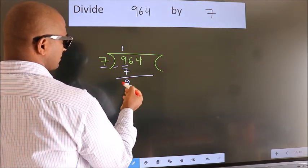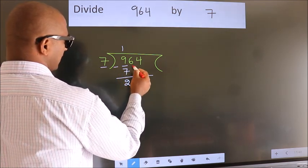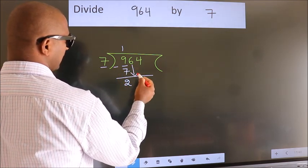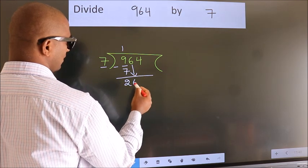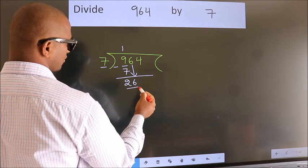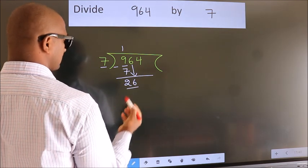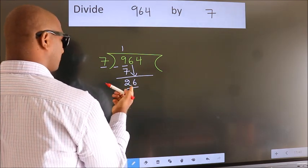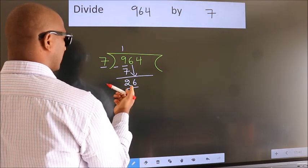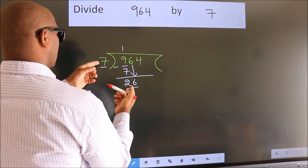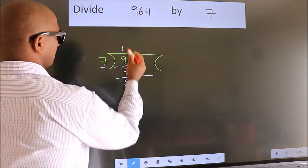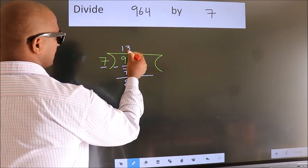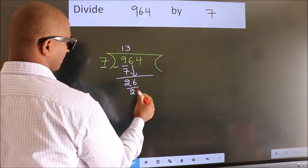After this, bring down the beside number. So, 6 comes down. So we have 26. A number close to 26 in the 7 times table is 7 threes, which is 21.